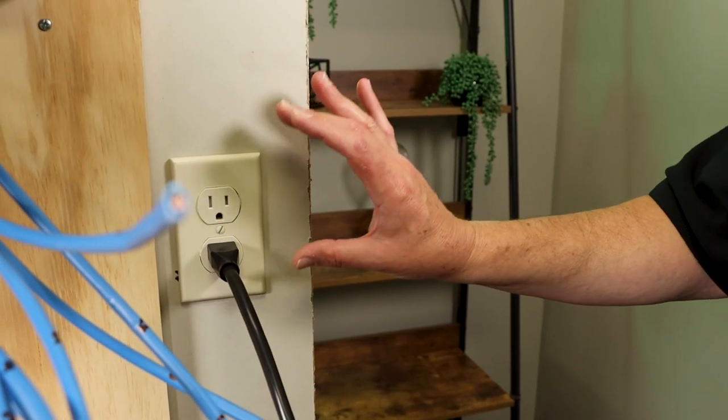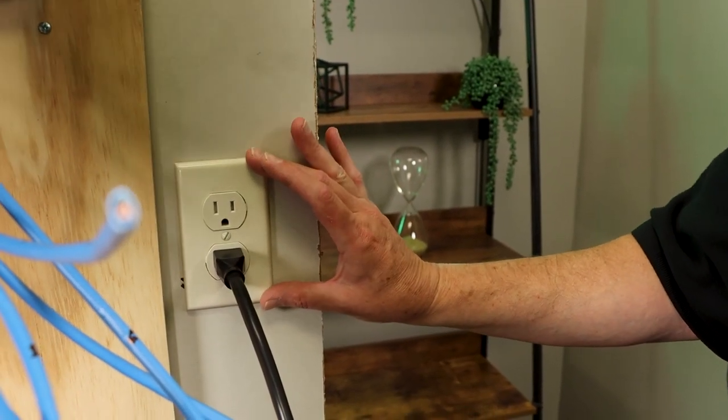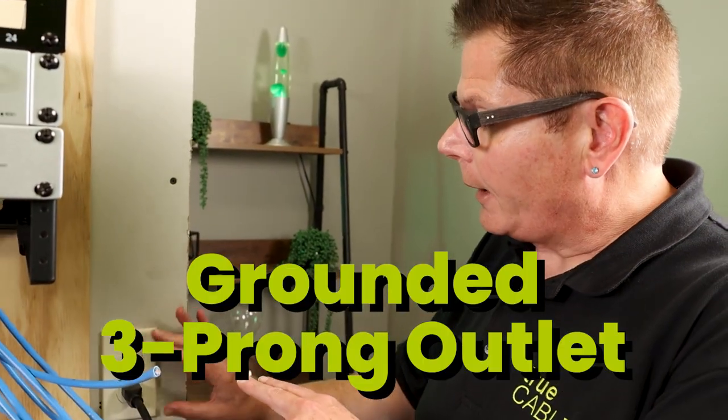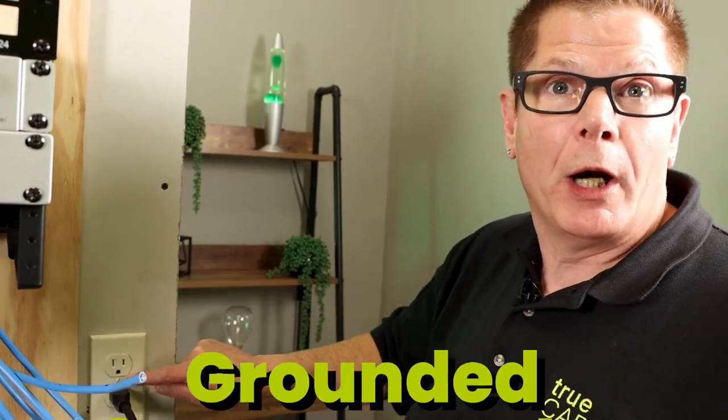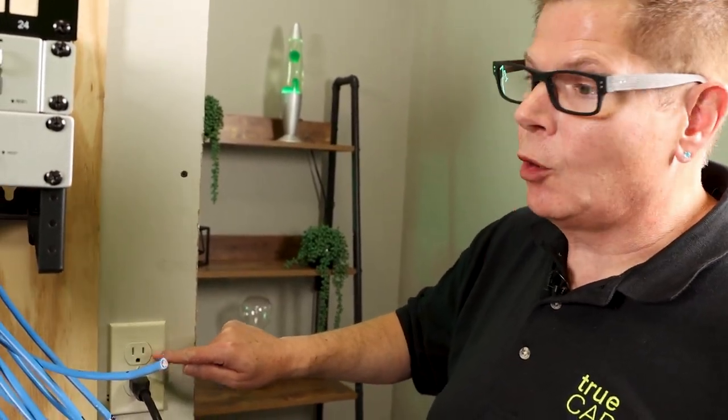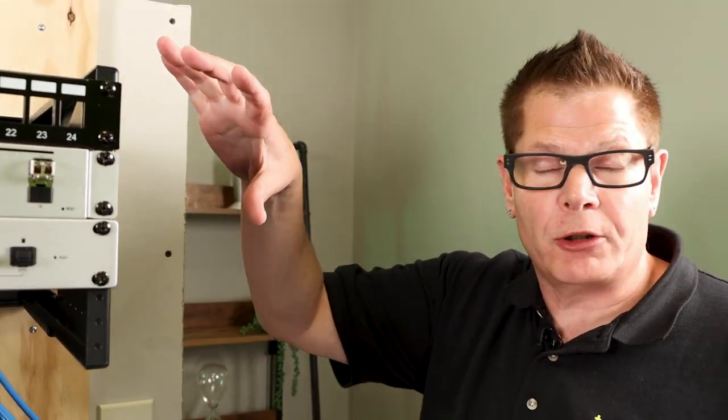So everything starts with, first of all, you need to know you've got good power. You want a grounded three-pronged outlet and you need to make certain that the outlet is wired properly because the equipment is going to, if you're going to be running shielded cable especially,